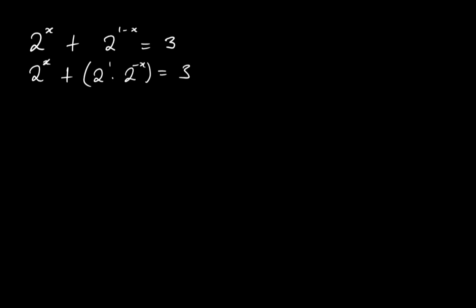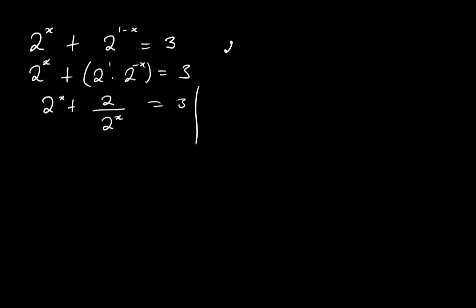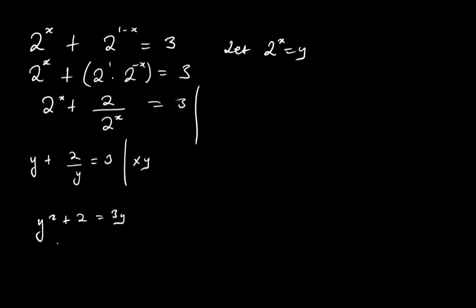I've now reached that stage where things don't make sense, so let 2 to the x equal y. We have y plus 2 over y equals 3. Multiply through by y: y squared plus 2 equals 3y. Rearranging gives y squared minus 3y plus 2 equals zero.